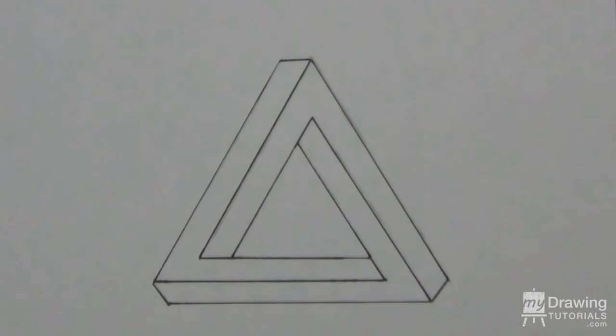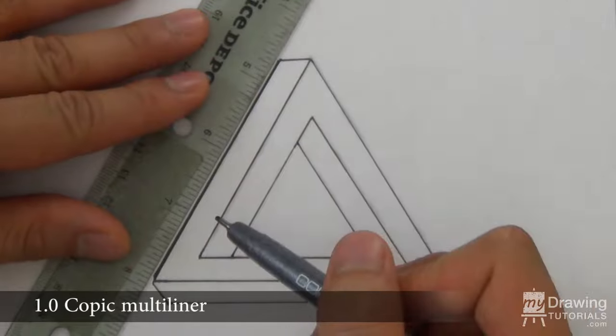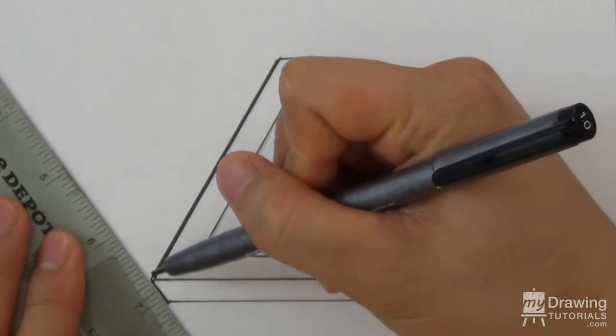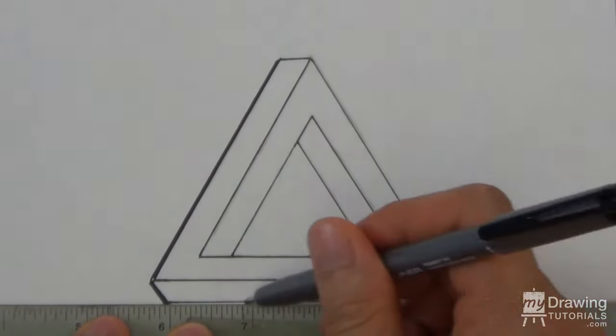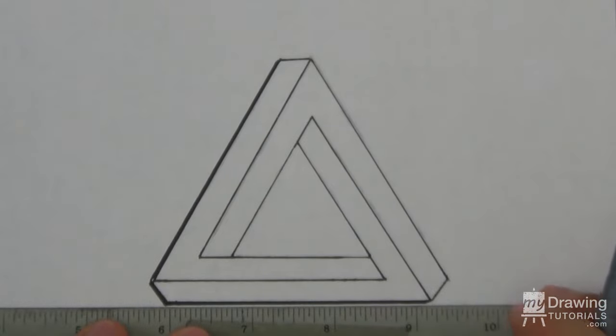So we're pretty much done with our triangle, and you can stop here if you like. But I'm going to add a few finishing touches to make the drawing really pop. I'll use a 1.0 size pen to create a thick outline at the outer edge of the triangle, and also at the center.